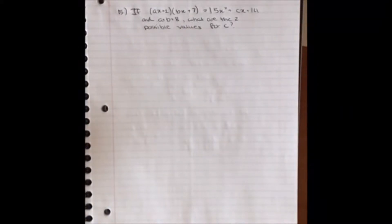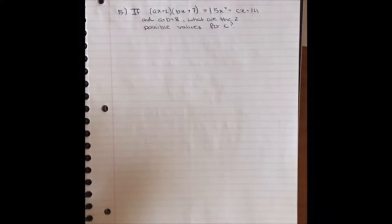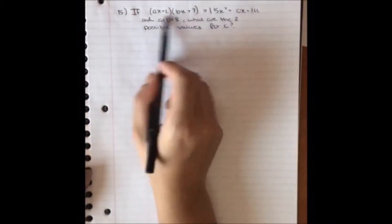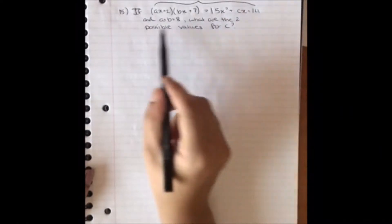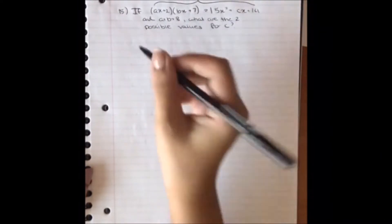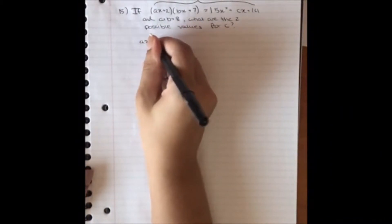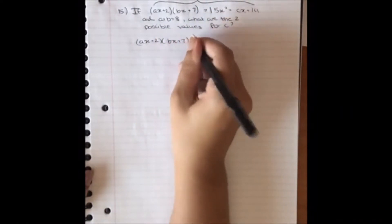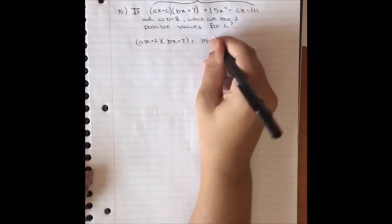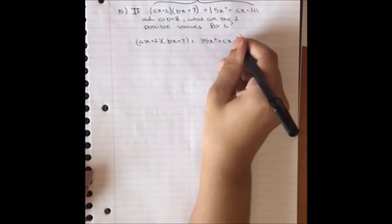Number 15 reads: if ax plus 2 times bx plus 7 equals 15x squared plus cx plus 14, and a plus b is equal to 8, what are the two possible values for c? I'm going to write out this entire section of the problem again, keeping in mind that there is this other source of information. So ax plus 2 multiplied by bx plus 7 equals 15x squared plus cx plus 14.